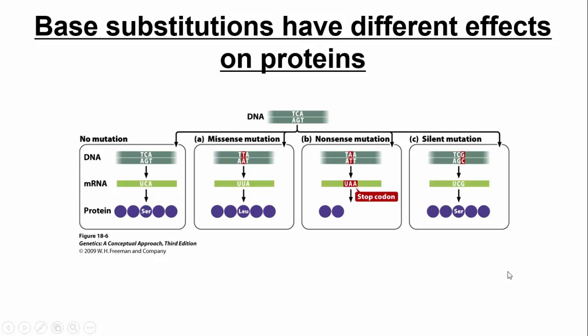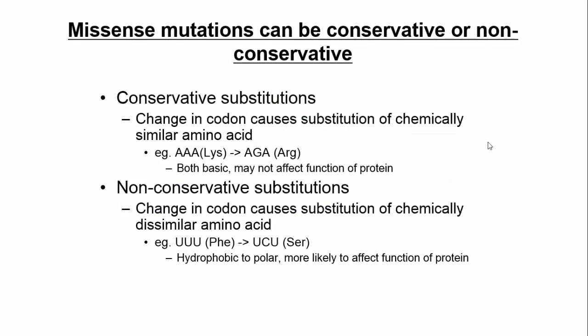You might be thinking — wait, silent mutation, progeria. There is a connection to that as we talked about in previous lectures, but that's an exception to the rule. So normally silent mutations are not a big deal. Of the missense mutations where we change one amino acid, those are further subclassified into conservative or non-conservative.